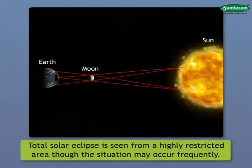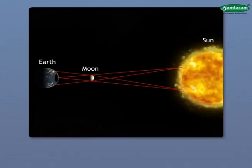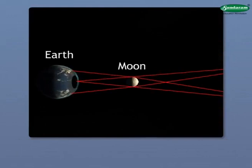Total solar eclipse is seen from a highly restricted area, though the situation may occur frequently. However, a partial eclipse can be observed at the same time from the region under Penumbra. The region from which a total solar eclipse can be seen is shown by A in this image. B in the image indicates the region from which partial solar eclipse can be seen. Note that from the region marked as C, the solar eclipse will not be visible.